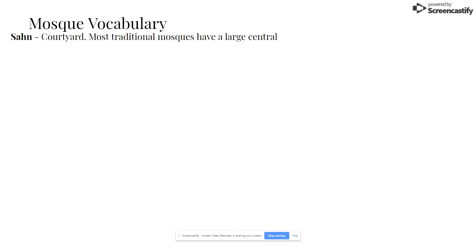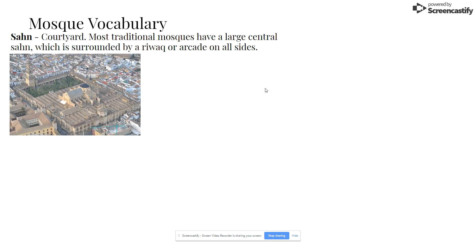The proper name is a sahn, and most traditional mosques have quite a large courtyard incorporating that outdoor space. Usually the courtyard is surrounded on all sides by an arcade — a row of columns that hold up arches. Here's an example of the courtyard from the Great Mosque of Córdoba, which we'll go over in just a moment. You can see a large outdoor space and the arcade right there.